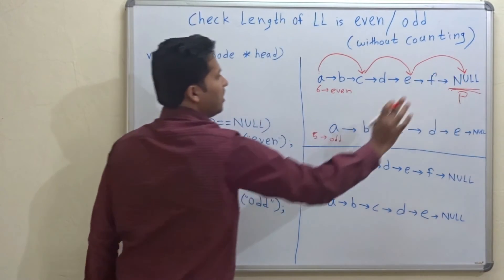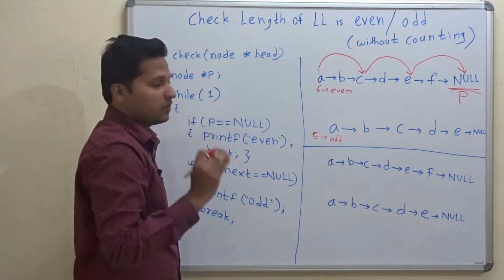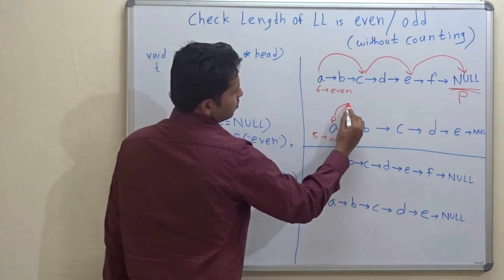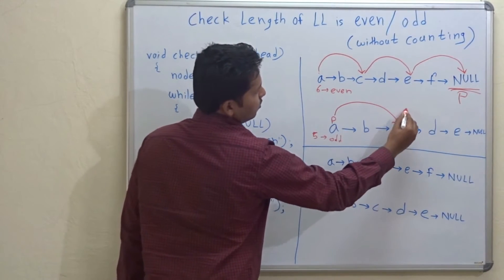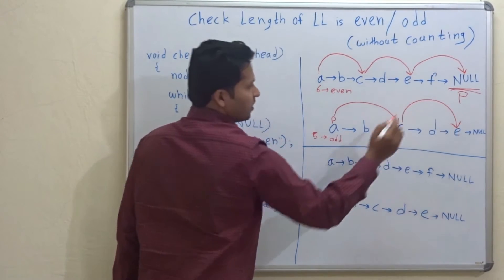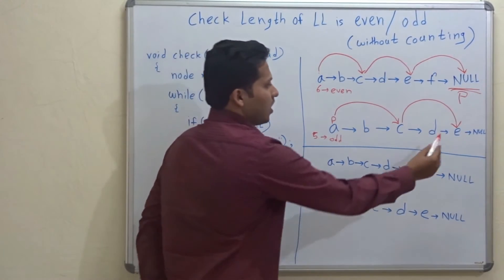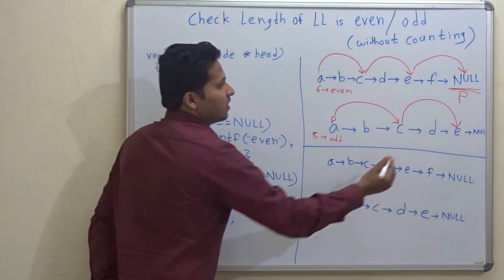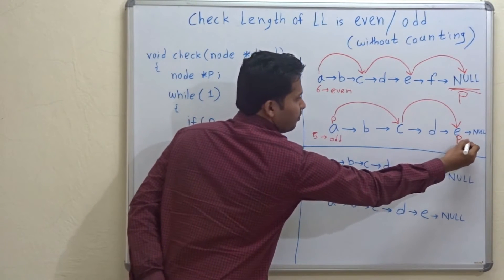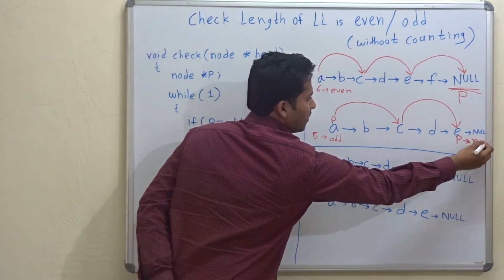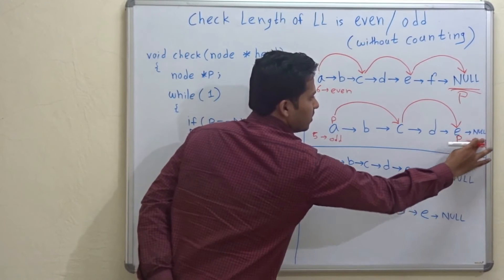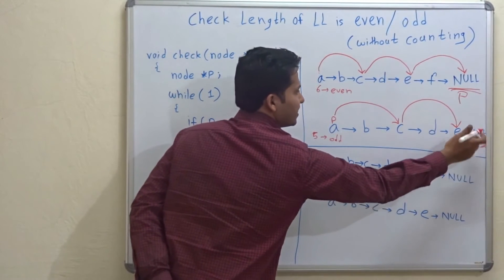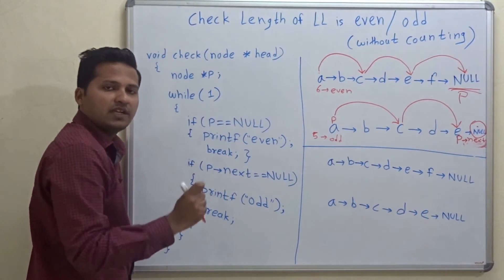So ultimately, P will point to null if the length of the linked list is even. And here, if P is pointing to A, two steps ahead it will point to C. Two steps ahead it will point to E. Now we cannot go two steps ahead. So if the length of the linked list is odd, then P's next is null. So P's next will be null if the length of the linked list is odd.